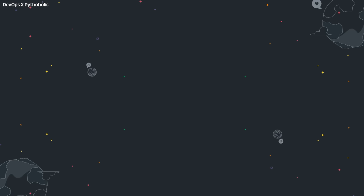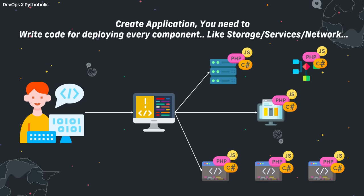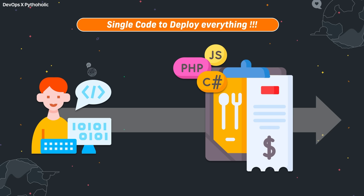Let's think of the dish as our own application deployment. We create our application and when it comes to its deployment, we might deploy them manually or write code for individual deployment resources — may it be compute, storage, or even the network. But what if there is a way to write a single code configuration that could help us deploy our application on demand?